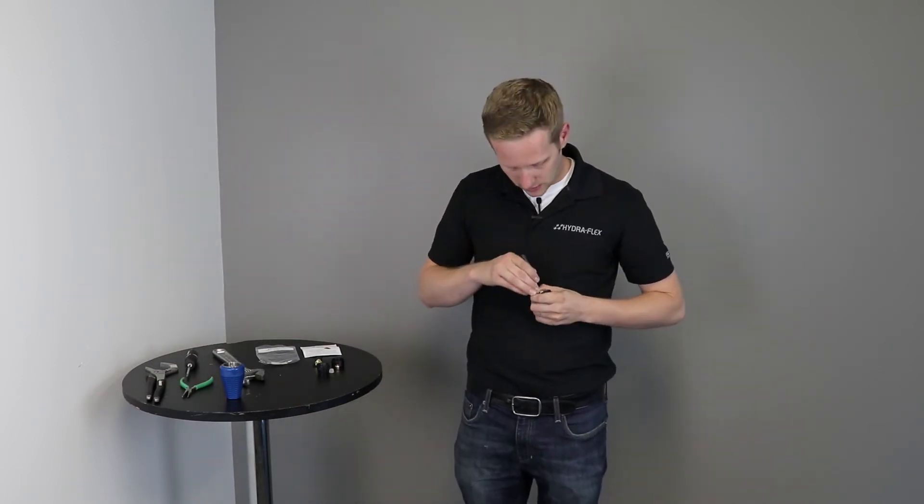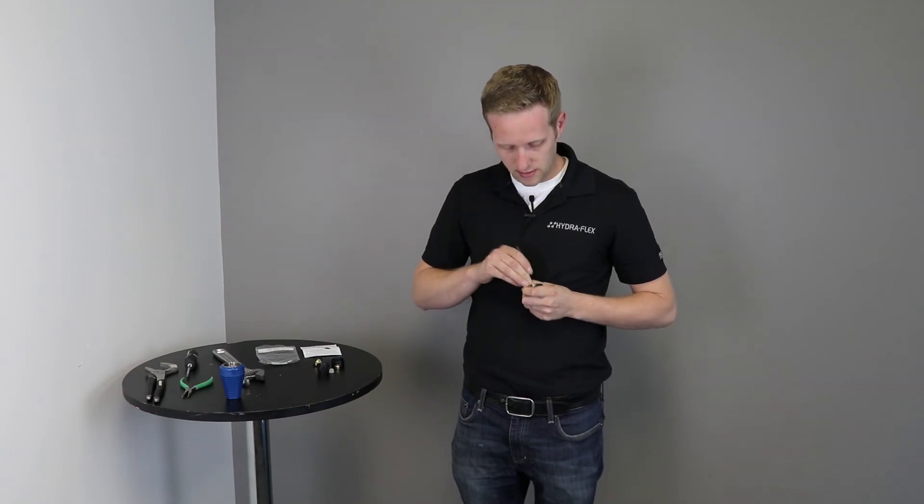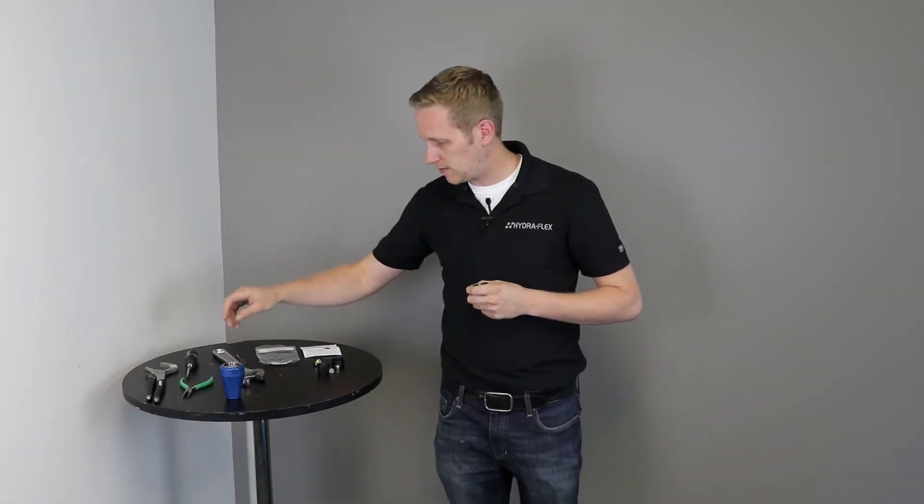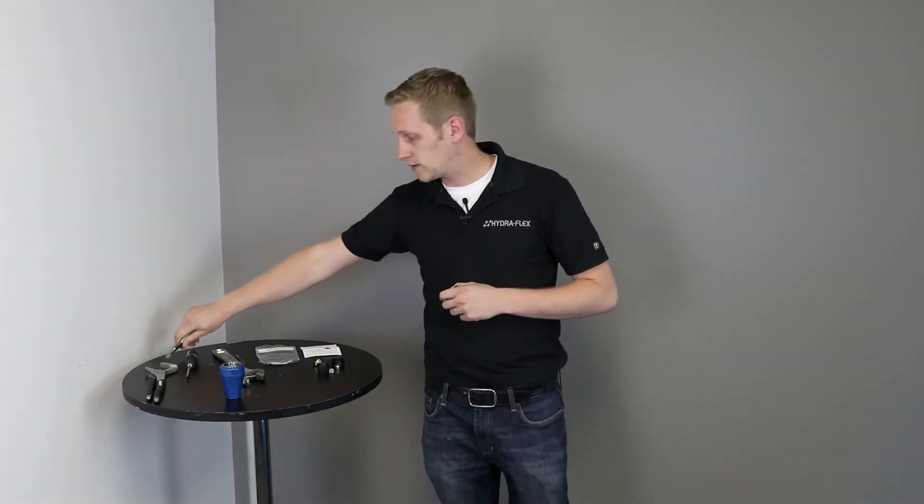Now we're going to remove the dome screen on the inside of the end cap. You can do this by grabbing a small flat-headed screwdriver and just kind of using it to pry the screen away from the side of the end cap, and then use your needle nose pliers, just pull out the old screen, and this can be thrown away.